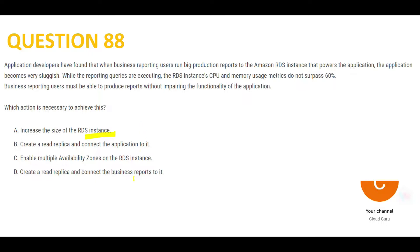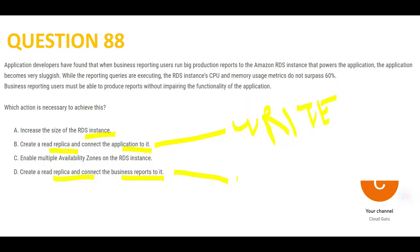Is there an option which splits read and write? Yes — option D says create a read replica and connect the business report to it. Option B also creates a read replica but connects the application to it, meaning write operations would go to the read replica — you don't want that. You want only read operations going to the read replica. So D is my answer.